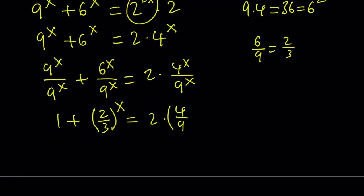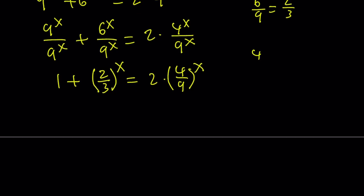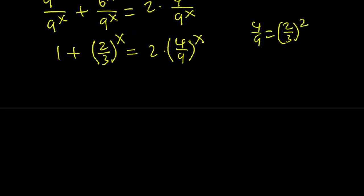What's the relationship between 4 9ths and 2 3rds? 4 9ths is 2 3rds squared, right? 4 9ths is 2 3rds squared. Awesome. The reason why this happens is because of this. Make sense? All righty.